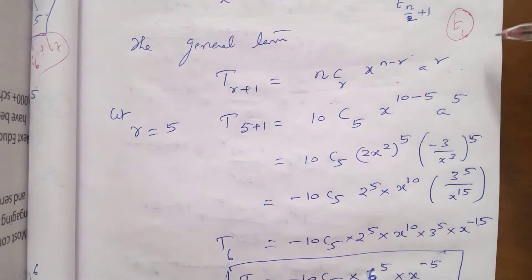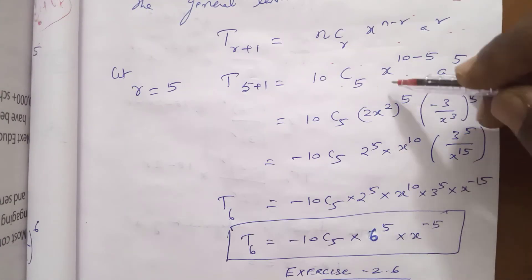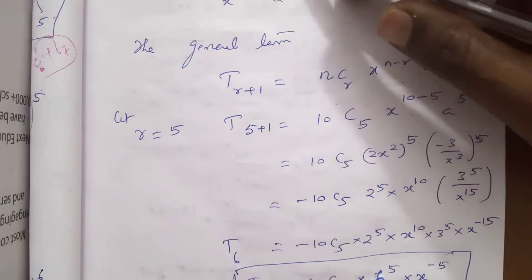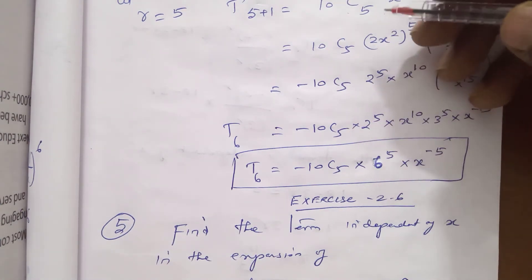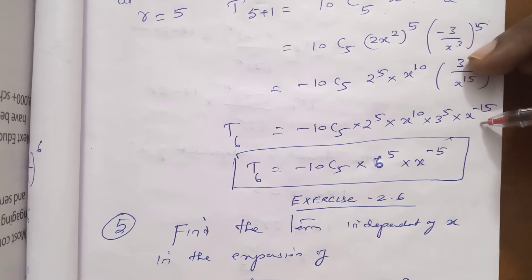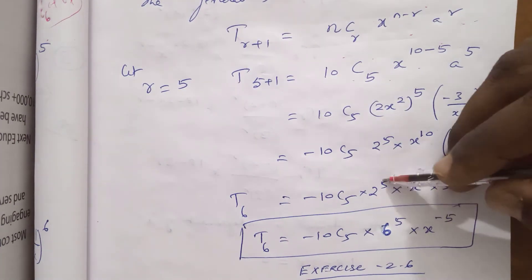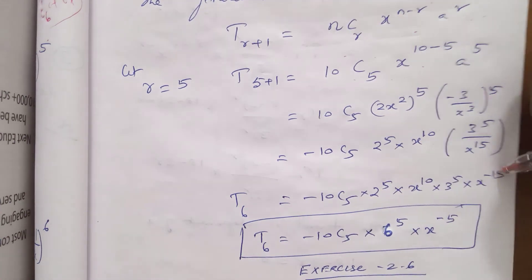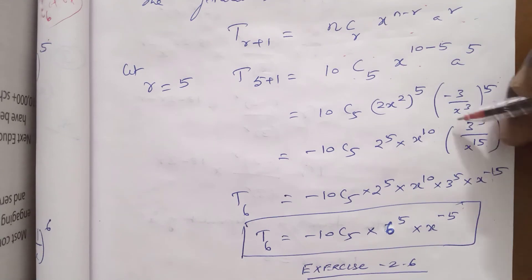At r = 5, T(5+1) = T6 = 10C5 · (2x²)^5 · (-3/x³)^5. This gives 10C5 · 2^5 · x^10 · (-3)^5 · x^(-15). Combining the x terms: x^(10-15) = x^(-5). The final answer is T6 = -10C5 · 2^5 · 3^5 · x^(-5).